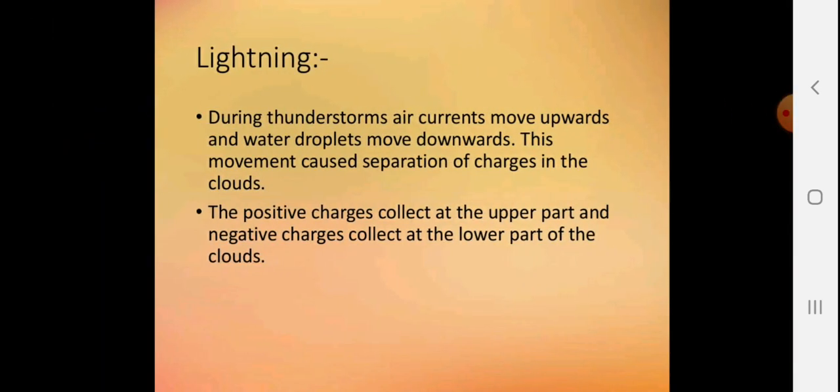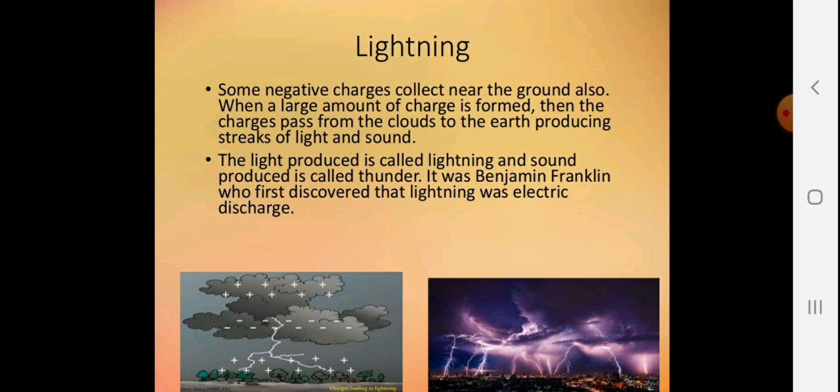What is lightning? During a thunderstorm, air currents move upward and water droplets move downward. This movement causes the separation of charge in the clouds. The positive charge collects at the upper part and negative charge collects at the lower part of the clouds. Some negative charge collects near the ground also. When a large amount of charges form, the charge passes from the clouds to the earth, producing a streak of light and sound. The light produced is called lightning and the sound produced is called thunder. It was Benjamin Franklin who first discovered lightning as an electric discharge.